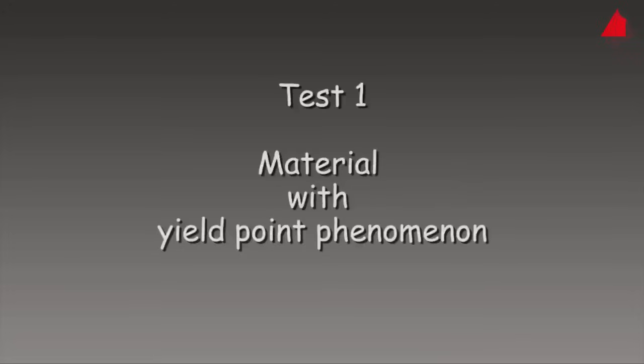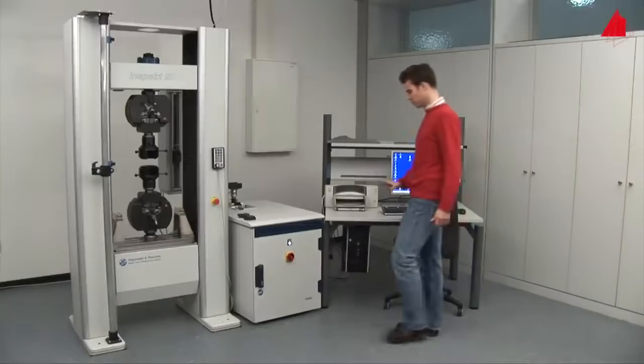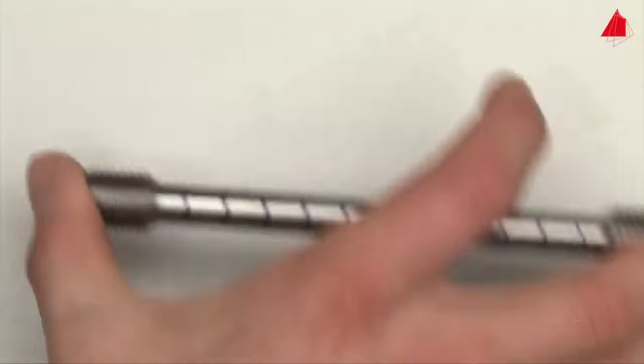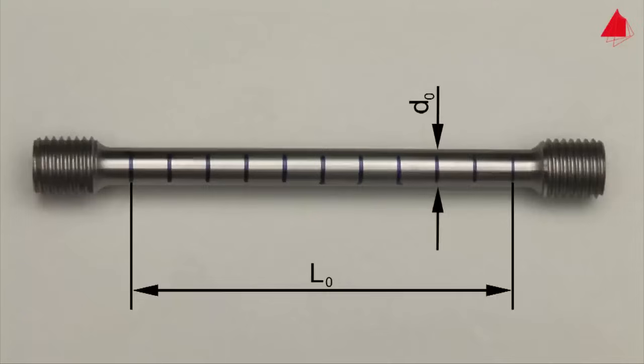The tensile test: first test material with yield point phenomenon. In the first tensile test, a plain carbon steel with yield point phenomenon is to be tested. This is the test piece. It has a cylindrical test region with an original diameter of 10 millimeters and an original gauge length of 100 millimeters. Within this test region, distance marks have been drawn at regular intervals. They help to visualize and measure the plastic behavior of the specimen.